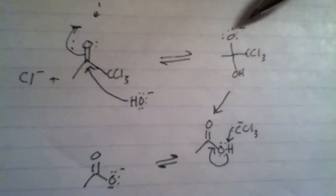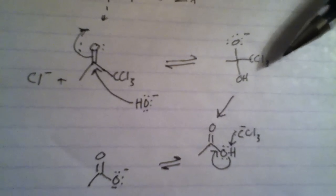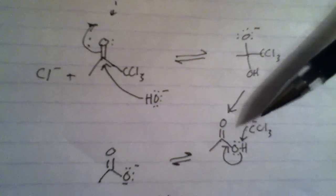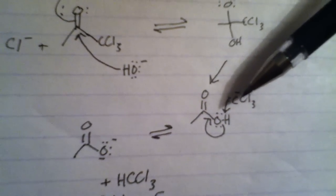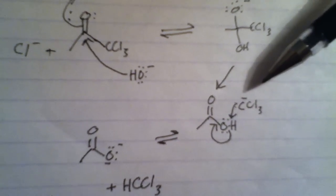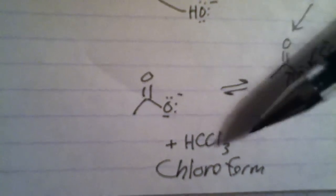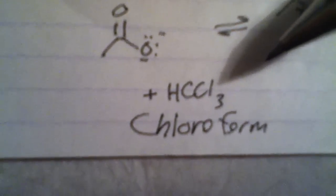This anionic oxygen displaces the trichloromethyl group, generating the more stable carbonyl. The carboxylic acid protonates the trichloromethyl anion, generating a carboxylate anion and chloroform, or trichloromethane.